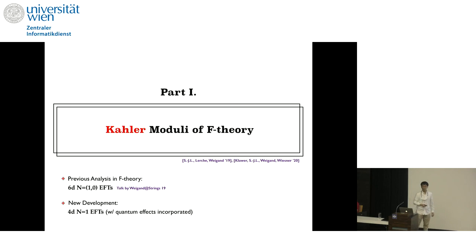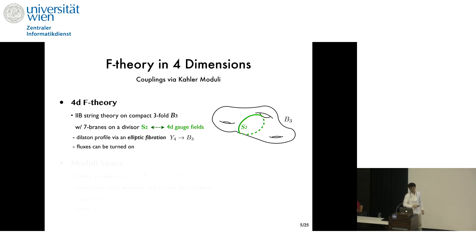So let's start with the Keller moduli in F-theory. In fact, in Strings 19, Timo talked about our progress in 6D. The general ideas will be pretty similar here, but a new success is that now we can control all Keller limits of four-dimensional N equals one F-theory with some quantum effects incorporated as well. Four-dimensional F-theory is another name for type 2 string theory on a compact Keller 3-fold B3 with seven branes on its divisor S. So S is a complex surface, and external gauge fields arise there. And these branes source a non-trivial axio-dilaton profile, and all of this is encoded in an elliptically-fibered Calabi-Yau manifold over this B3.